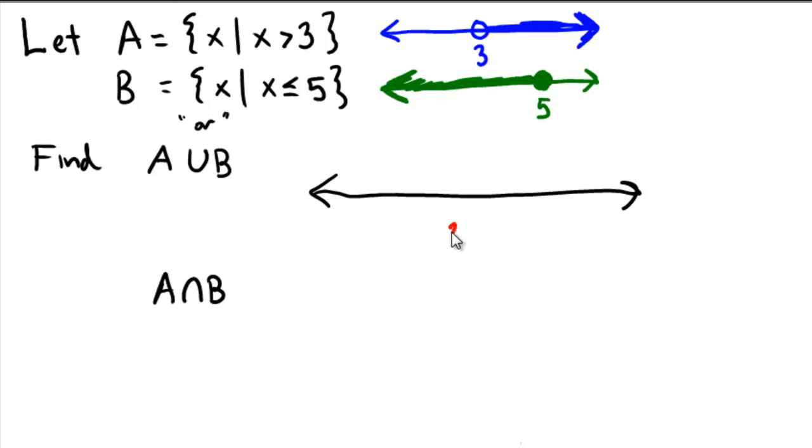go down to the number line. We'll put the indicator at 3 and an indicator at 5. And for union, it means it can be shaded in either the top or the bottom. So either blue or green. So notice when we look up at our graphs that blue and green cover the whole gamut, the whole set of numbers from negative infinity to infinity.